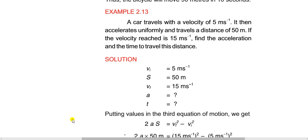Assalamualaikum students. Today we will start Example 2.13. A car travels with an initial velocity of 5 meters per second, then accelerates uniformly and travels a distance of 50 meters. The final velocity reached is 15 meters per second. We have to find the acceleration and the time to travel this distance.